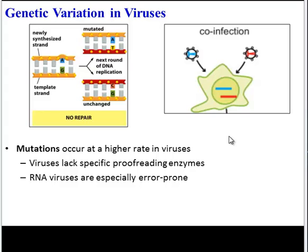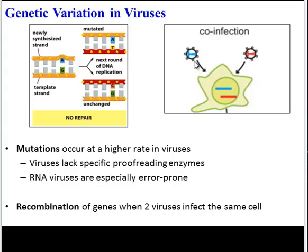Another important note is that sometimes two different viruses can infect a cell at the same time. This is called co-infection. During that process, the DNA or RNA from the two different viruses might recombine, increasing genetic variation. So this concludes our summary of how viruses transfer genetic information. In class, we'll take a look at some viruses we've been hearing about in the news and how they transfer their genetic information.